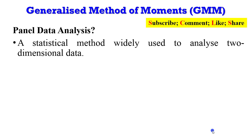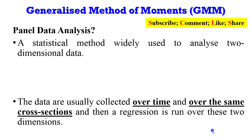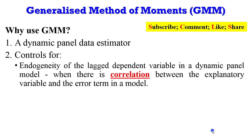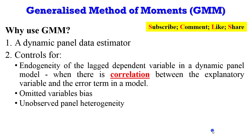Panel data analysis is a statistical method widely used to analyze two-dimensional data. So why use GMM? GMM is a dynamic panel data estimator. It controls for endogeneity of the lagged dependent variable in a dynamic panel data model — endogeneity simply means there is correlation between the explanatory variable and the error term. GMM also controls for omitted variable bias, unobserved panel heterogeneity, and measurement errors in your data.